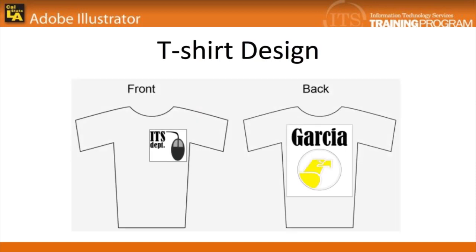Illustrator can also be used to create graphics for print on t-shirts. In this exercise, we'll create a digital design for the front and back side of a t-shirt. To help visualize how the design will apply, be sure to download and use data file t-shirt.ai containing a t-shirt outline.